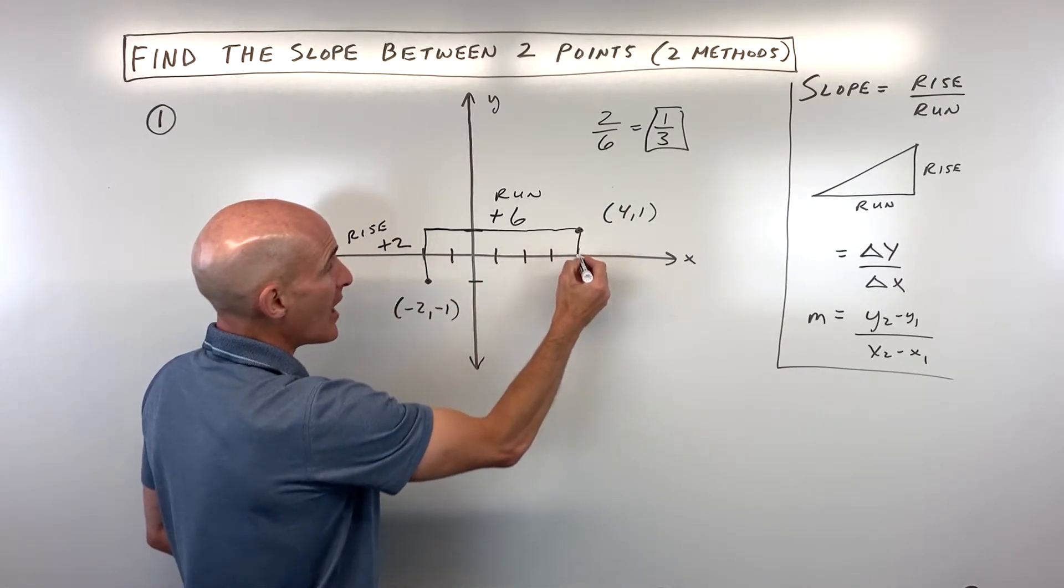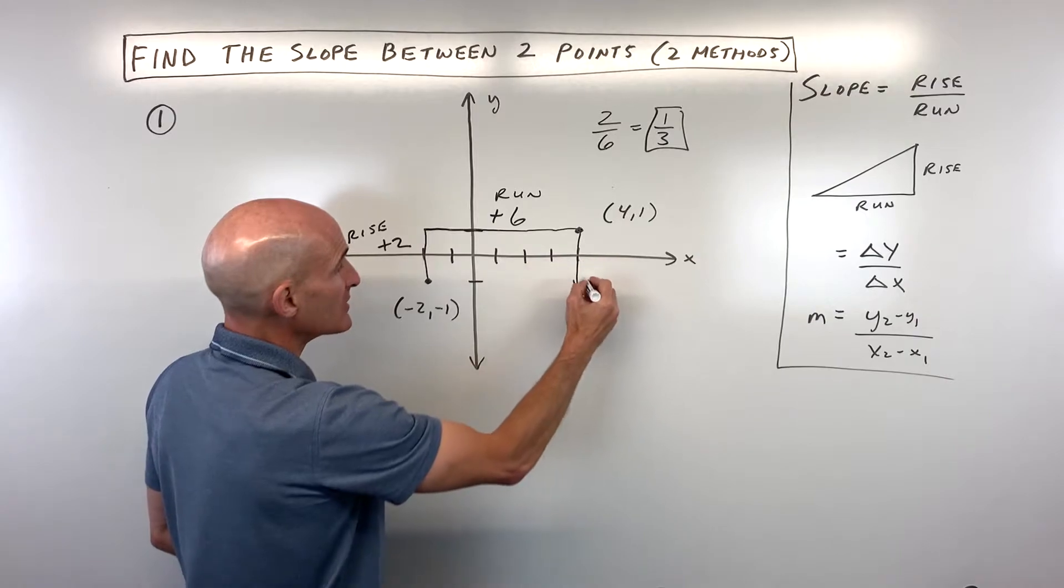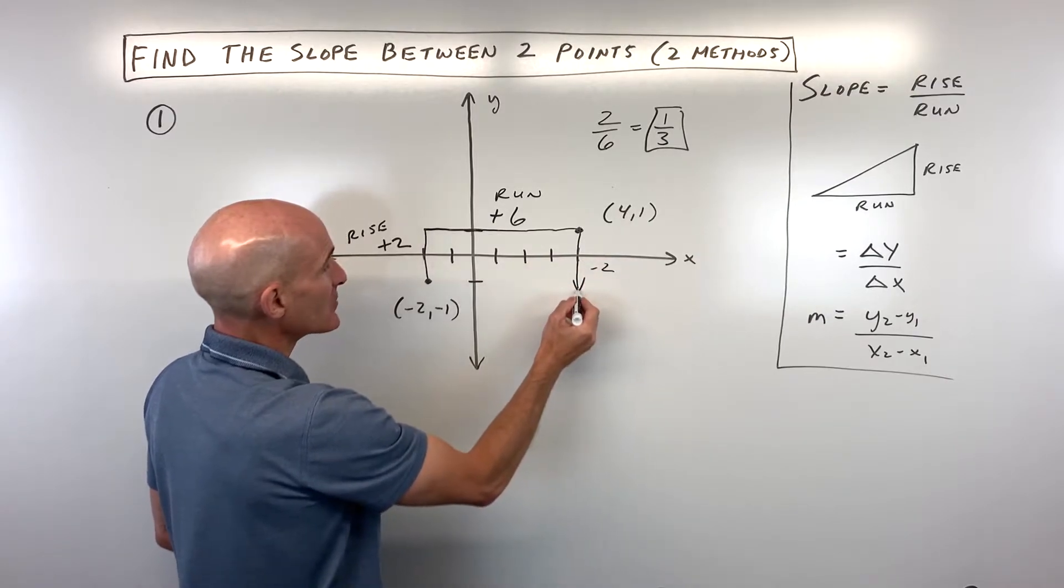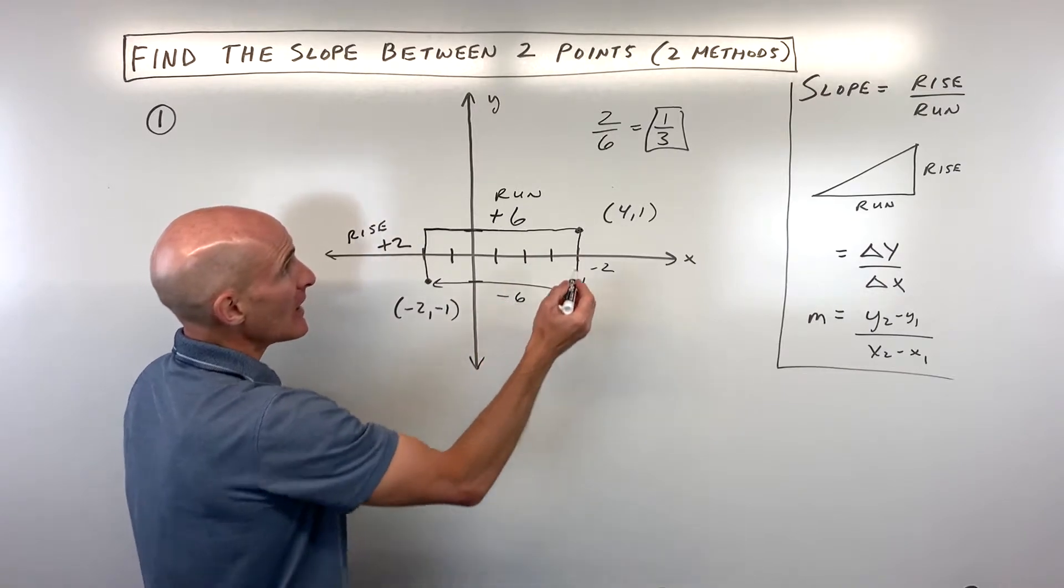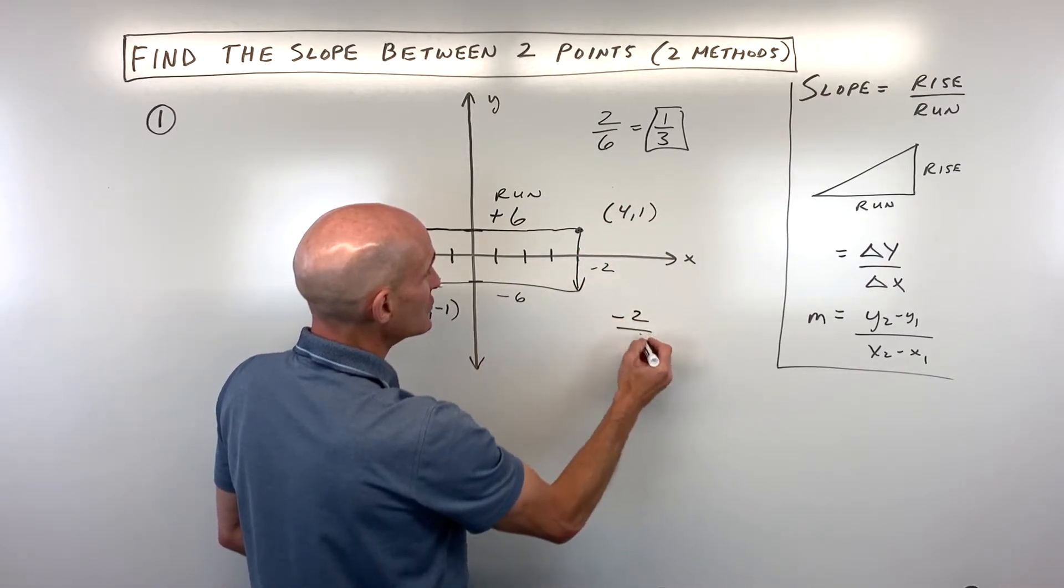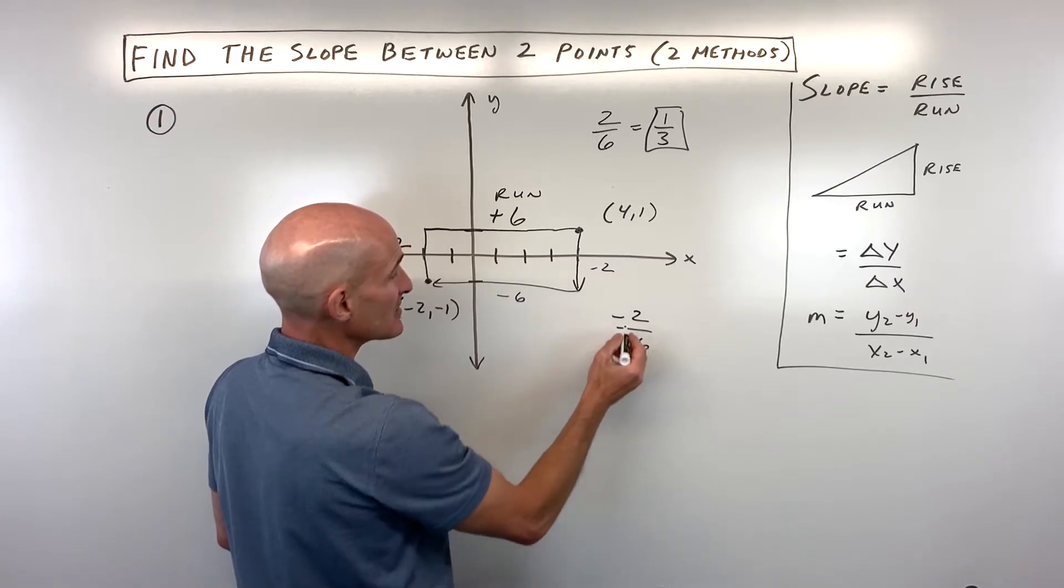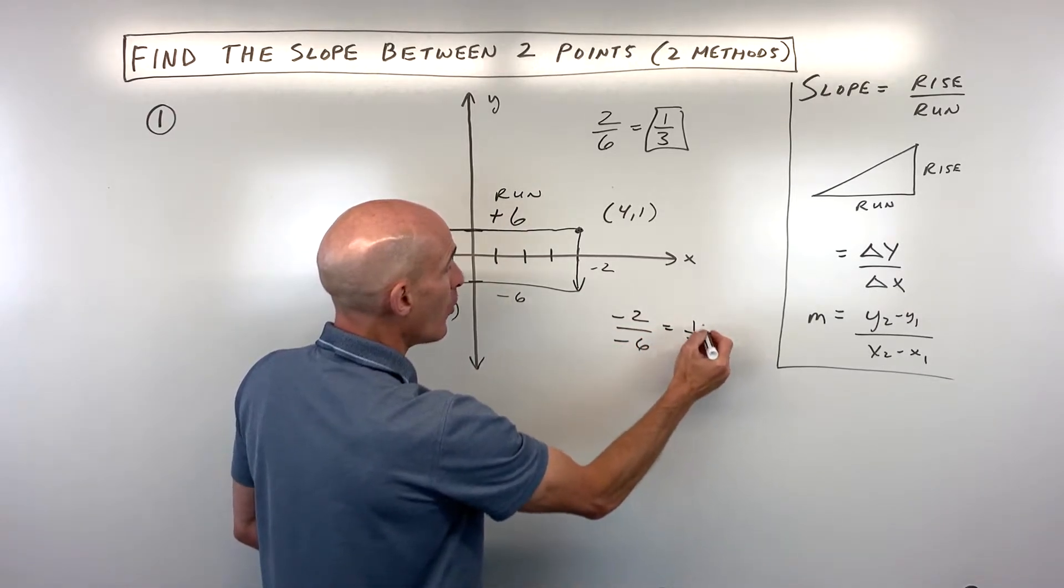Here we could say let's go down 2. I went down, that's a negative 2, and then let's go left 6. Left is negative. Now you can see we get negative 2 over negative 6, which is equal to one third.